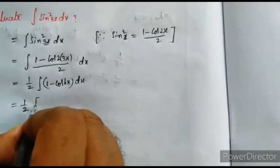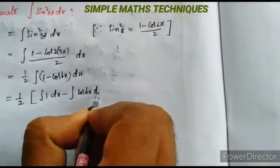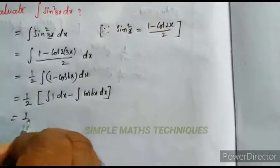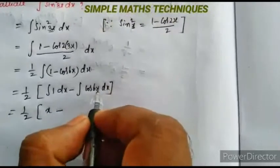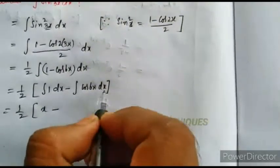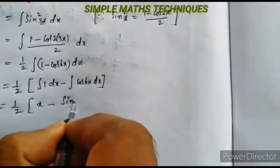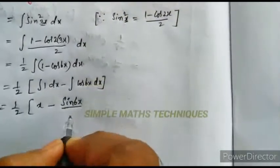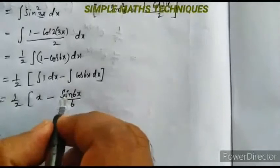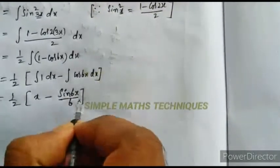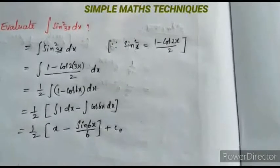So 1/2 into integration of 1 dx minus integration of cos 6x dx. Integration of 1 dx is x. Integration of cos 6x dx is sin 6x/6, since the coefficient of x is 6. Therefore the answer is 1/2 · (x - sin 6x/6) plus c. This is the solution.